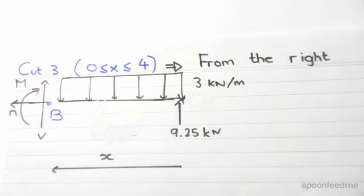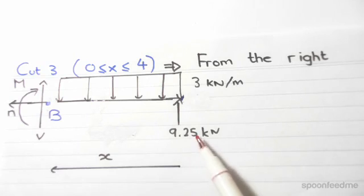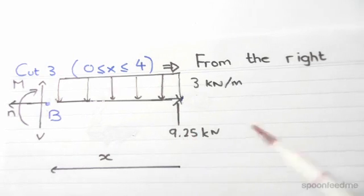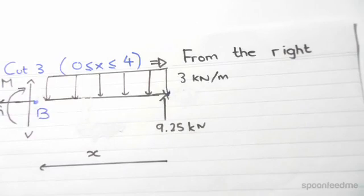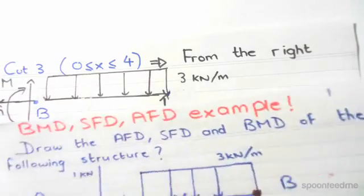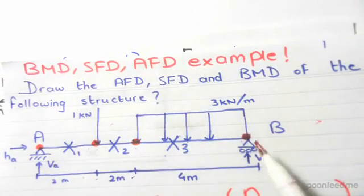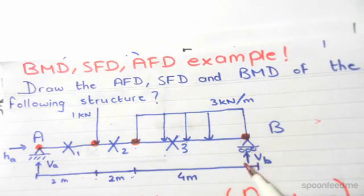Whereas if we cut from the right, all we have to technically include is the reaction force by the roller and the UDL. So if you look at the original diagram, if we cut from the right, the first cut just includes the roller and the UDL.